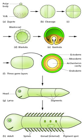New roots grow from root meristems located at the tip of the root, and new stems and leaves grow from shoot meristems at the tip of the shoot. Branching occurs when small clumps of cells left behind by the meristem, which have not yet undergone cellular differentiation, begin to grow as the tip of a new root or shoot. Growth from any such meristem at the tip is termed primary growth and results in lengthening. Secondary growth results in widening of a root or shoot from divisions of cells in a cambium. A plant may also grow through cell elongation.